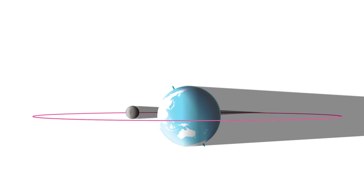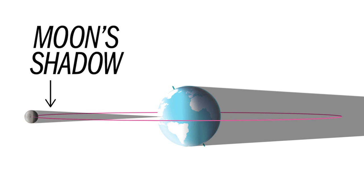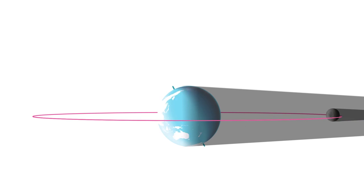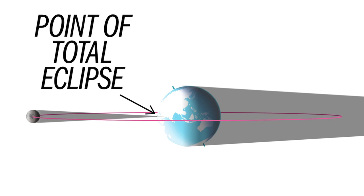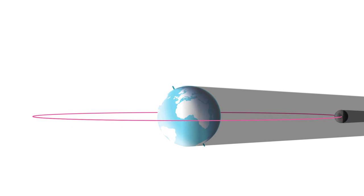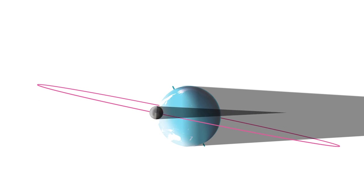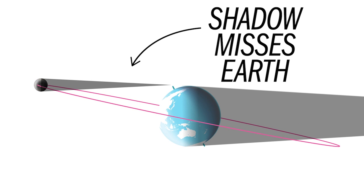The Moon orbits the Earth once each month, so why doesn't the Moon's shadow touch the Earth, causing an eclipse with each pass? Partly because the Moon's orbit is tilted slightly, which causes its shadow to miss the Earth most of the time.